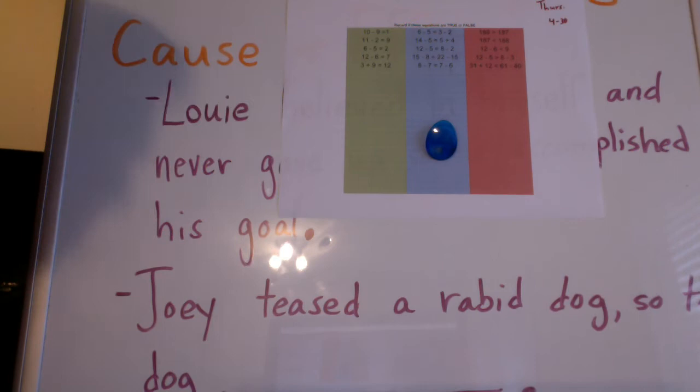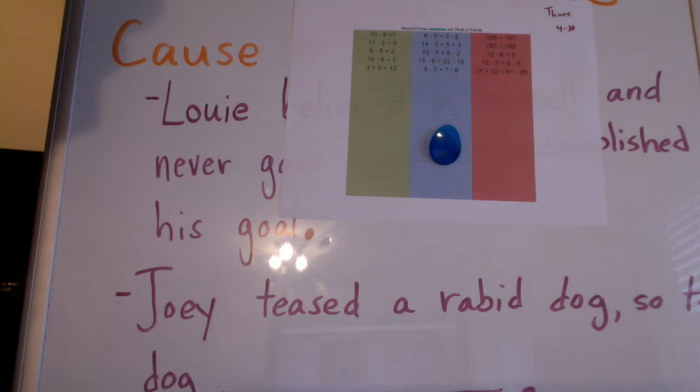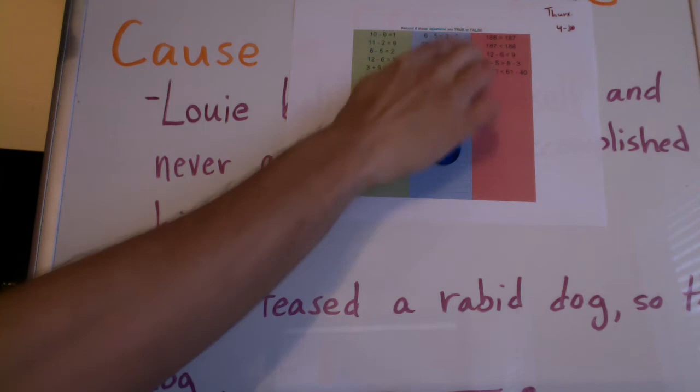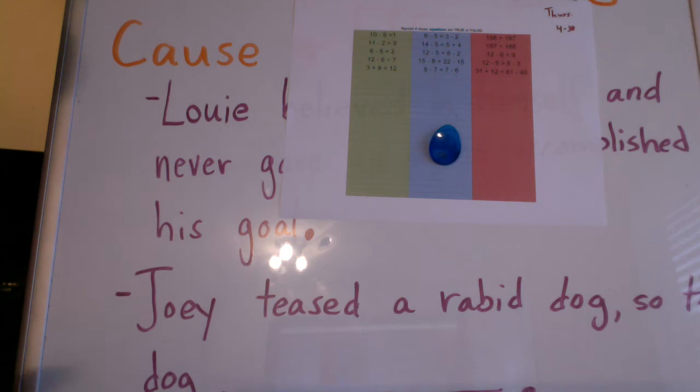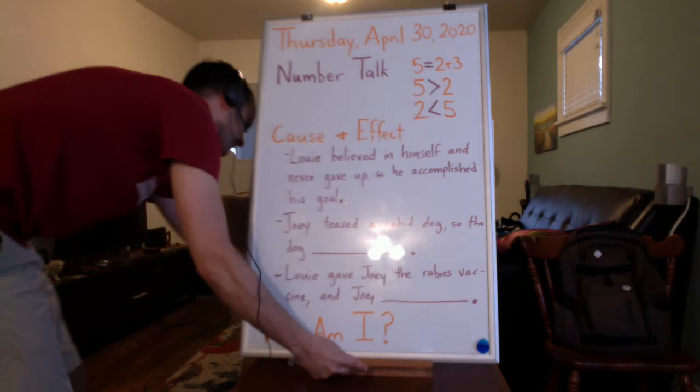Let's get a little bit closer here. So our instructions say: record if these equations are true or false. So in the units, tens, and hundreds column, there are equations, and some of them are correct. If they're correct, meaning they are true, you would write true. If they are incorrect, you would write false on the line. So to demonstrate this, I'm going to pull out another whiteboard because I want to review a concept with you that all thirds and all second years have seen that have gotten to checkerboard.